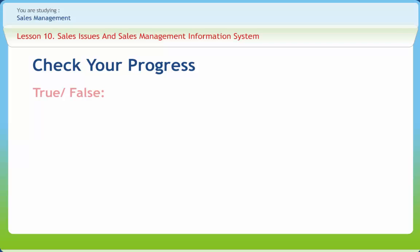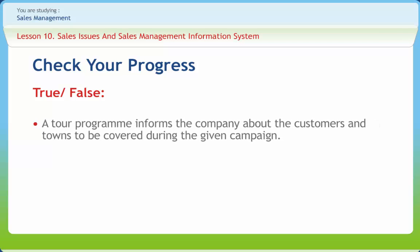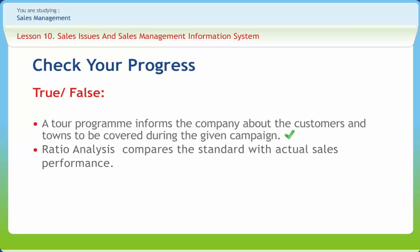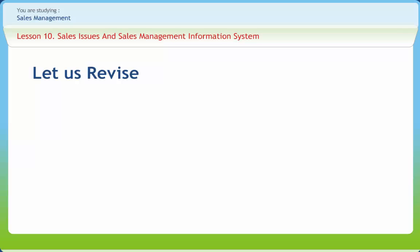Let us check if we have understood the various concepts discussed in this lesson. A tour program informs the company about the customers and towns to be covered during the given campaign — right or wrong? Ratio analysis compares the standard with the actual sales performance — true or false? Review is a part of reporting — right or wrong?